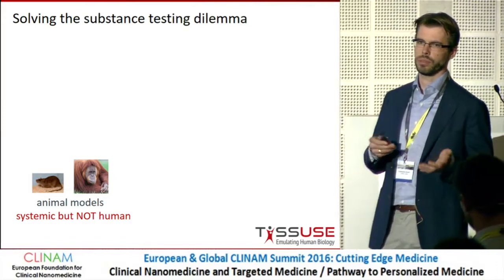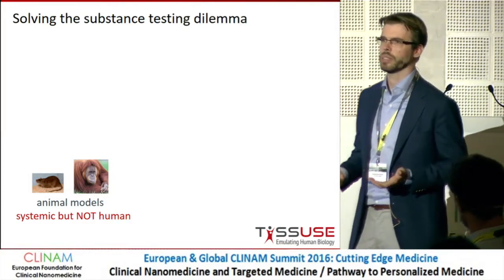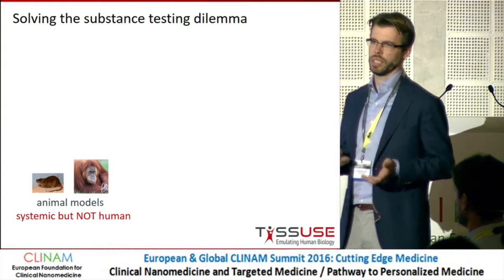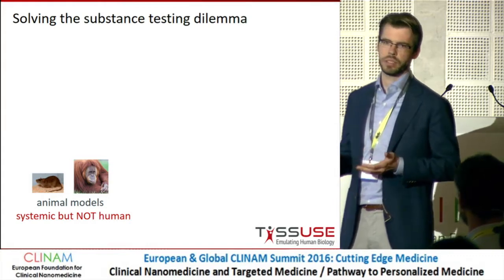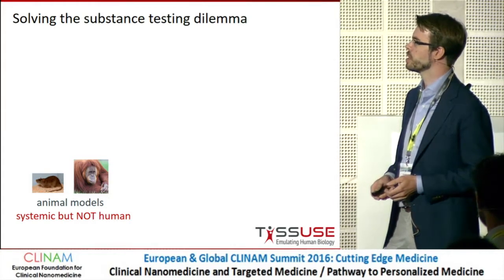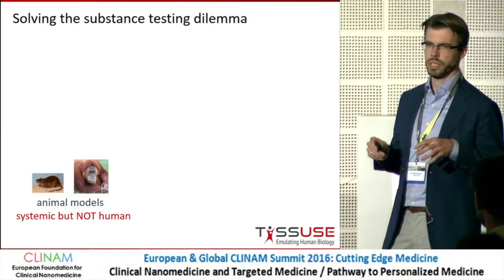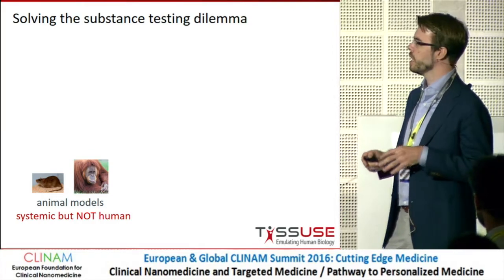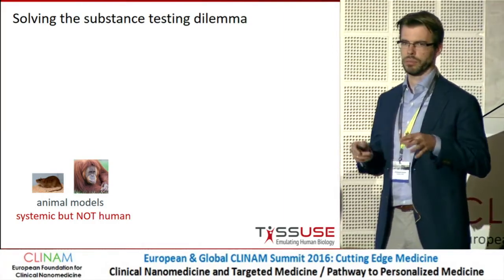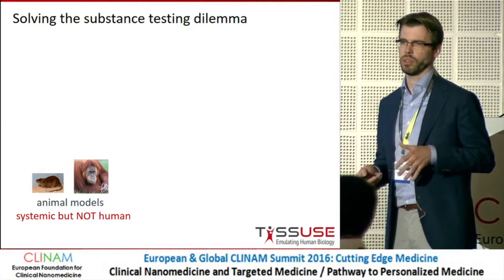Every substance — be it a new drug, a new chemical, a new nanoparticle — has to be tested for safety and, in the case of drugs, for efficacy before going into humans. So we have the pre-clinical testing phase, and we have two pre-clinical model groups, which both have severe drawbacks.